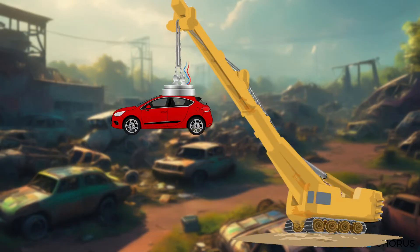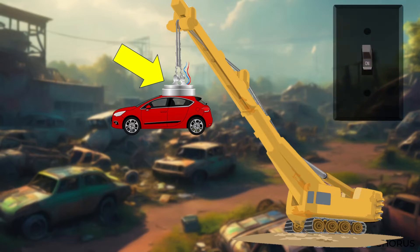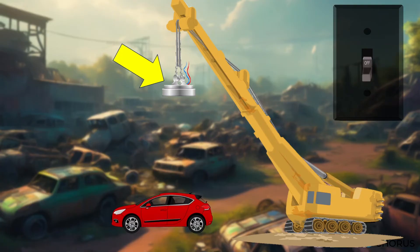These giant magnets pick up and move heavy metal objects, like cars. The crane uses an electromagnet to grab onto the metal. When the electricity is turned on, the magnet activates, and when the electricity is turned off, it drops the metal. Simple, yet powerful.